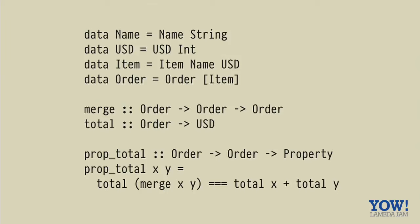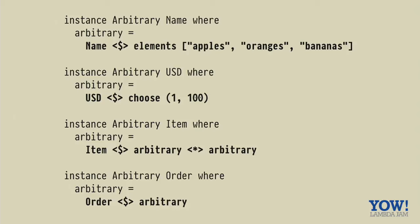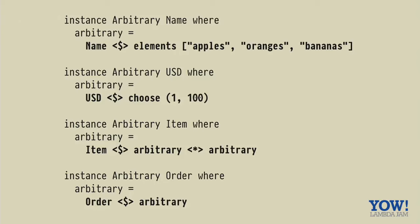So how do we write arbitraries for these types? I'm going to skip the shrinking part just for the moment. So for the naming, we might want to just generate some random names here for the price we'll just generate some number between one and a hundred. And then for item and order, we're just going to use the implicit resolution to pull a generator for those types. So if we come back to our property and we try and run it, we get a test failure.